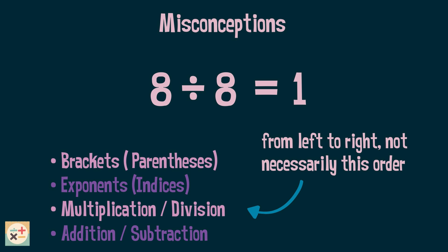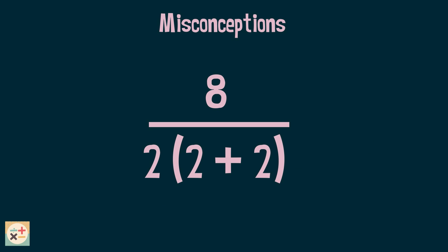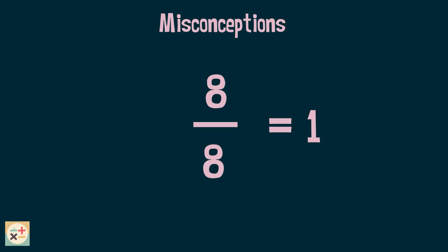Now let's have a look at another interpretation of this problematic expression. If we write the expression out in a fractional format like this, we also get an answer of 1. This is why some calculators may also give you an answer of 1. Note that there are also many other ways that this expression could be interpreted in a fractional format.